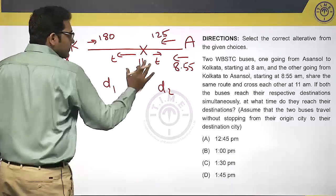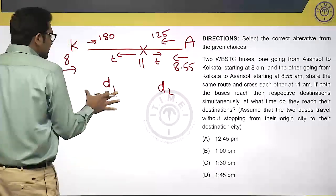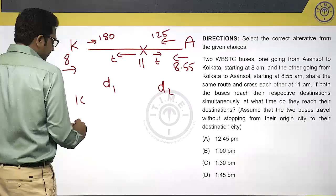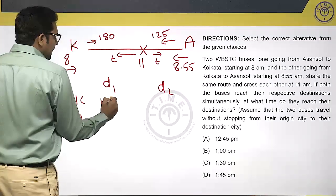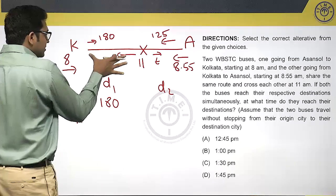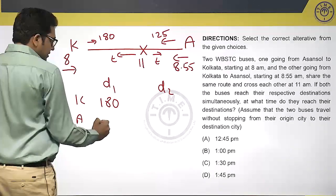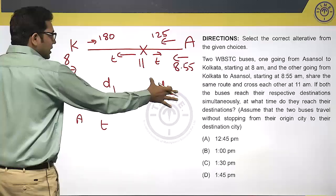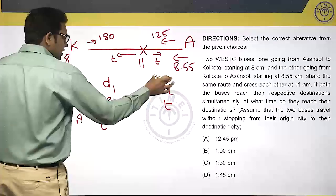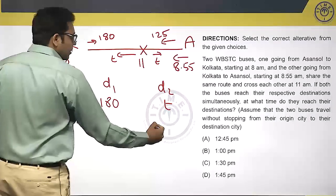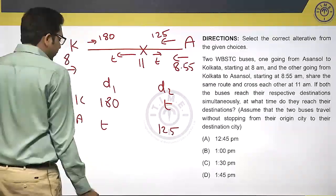Distance you have, this distance is D1, this distance is D2. Distance D1, K takes 180 minutes. Distance D1, A takes T minutes. Distance D2, K takes T minutes. And distance D2, A takes 125 minutes.